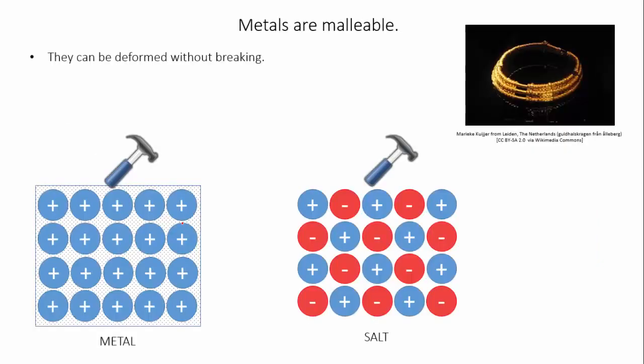Let's look at malleability first. Malleability means that a substance can be beaten into shape or it can be deformed without breaking. This property was what allowed the ancient Vikings, Romans and other civilizations to make gold jewelry and bronze and iron weapons and tools with very simple methods.